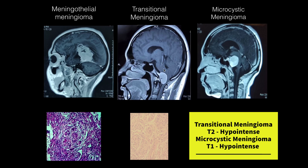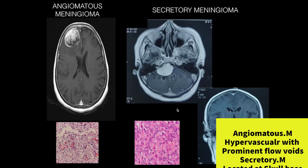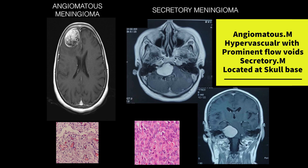A clival meningioma causing compression of the adjacent brain stem turned out to be the microcystic variant, characterized by T1 hypointense signal intensity, whereas the transitional type is characterized by T2 hypointense signal intensity. A right frontal convexity meningioma was the angiomatous type, characterized by increased vascularity. A right CP angle meningioma compressing the brain stem turned out to be the secretory type, which has a predilection for the skull base.